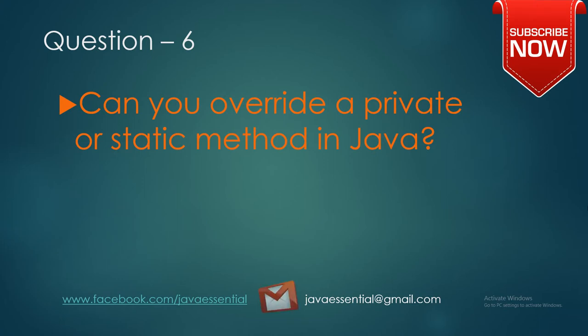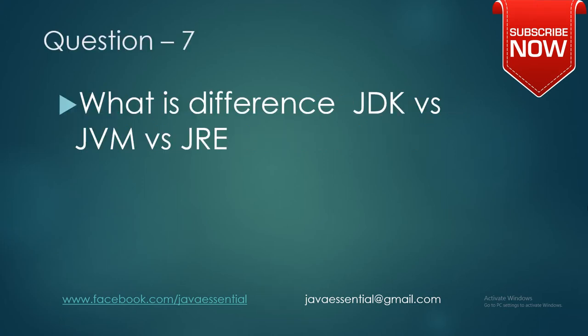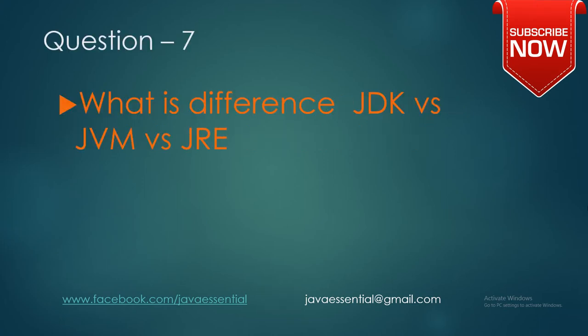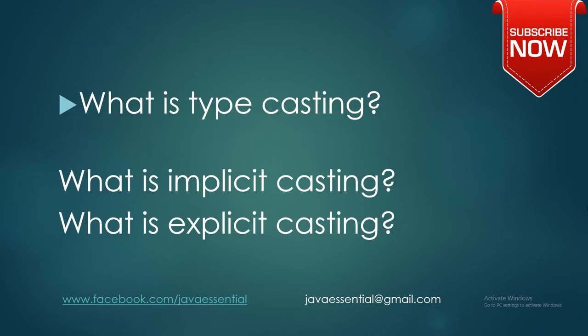Question number seven is: what is the difference between the JDK, JVM, and JRE? This looks like a very simple question, but if you elaborate your answer and explain it very well — covering how the JDK, JVM, and JRE are working — that will be good for you. Question number eight is: what is typecasting?